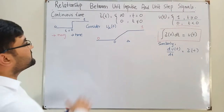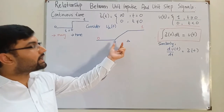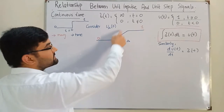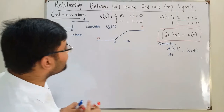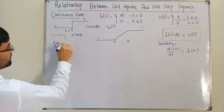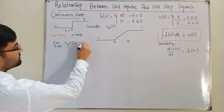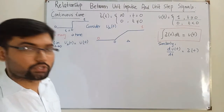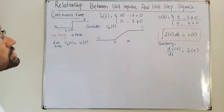The relationship between u_delta(t) and u(t): if you decrease the delta duration, the slope of the linear portion increases. Applying the limit as delta approaches 0, u_delta(t) becomes the ideal unit step signal u(t), which jumps directly to 1.